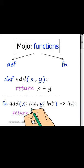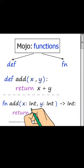So, unlike the first option, here, as we can see, the types of input parameters are specified, and also the type of the return value.